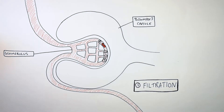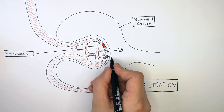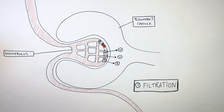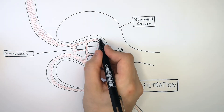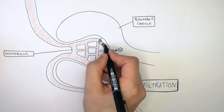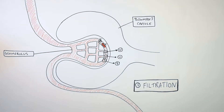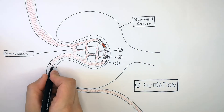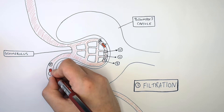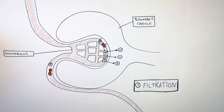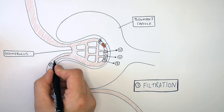It is called filtration because water, urea, and glucose are filtered out of the glomerulus and into the Bowman's capsule of the nephron. But because proteins and red blood cells are too large, they're not going to pass through the partially permeable membrane of the capillaries into the Bowman's capsule, so they remain inside the capillaries.